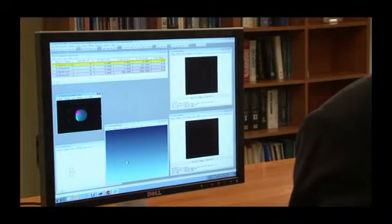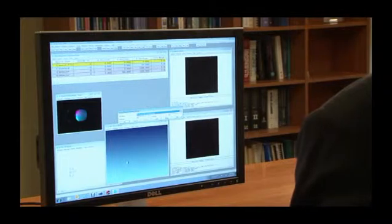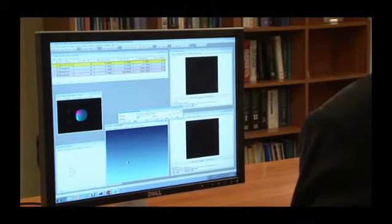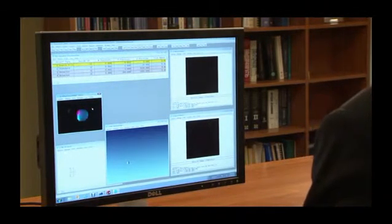The viewer allows us to view the source from any angle. We can also use this viewer to determine the orientation of the source as it was measured, and to get an accurate measure of the size of the source, which will come in handy in just a moment. It looks to be about 2.5 millimeters in radial size.